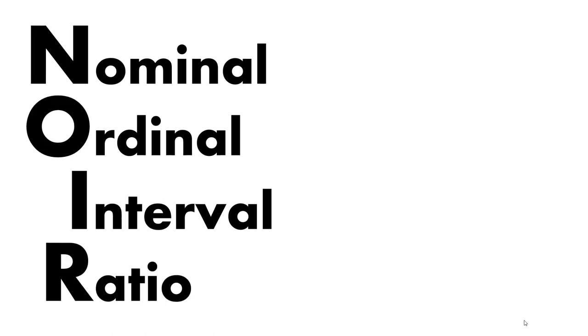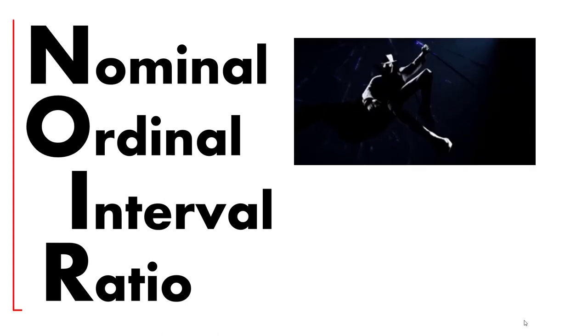Whenever we take a measurement in a marketing research project, that measurement will qualify as one of four different levels of measurement quality. Those four levels are nominal, ordinal, interval, and ratio level. Any data that you ever observe can be categorized into one of these four categories. You won't forget what these four categories are because you won't forget the French word for black: noir.